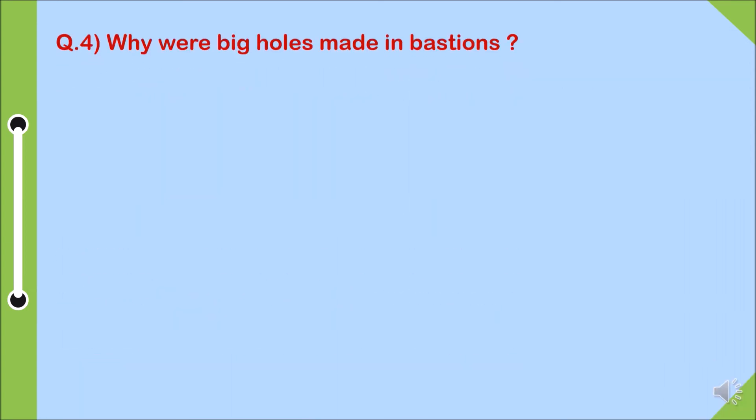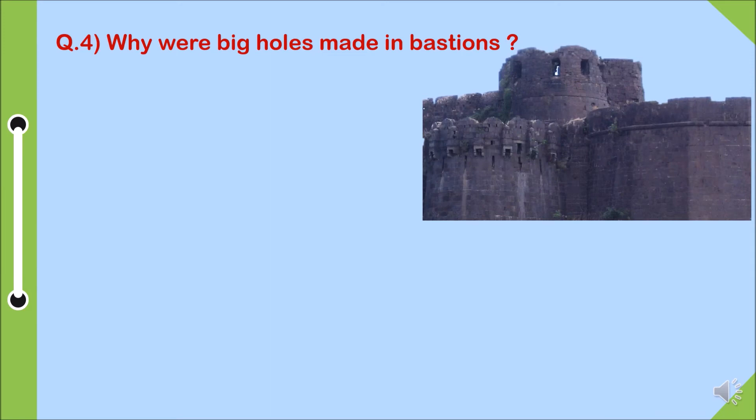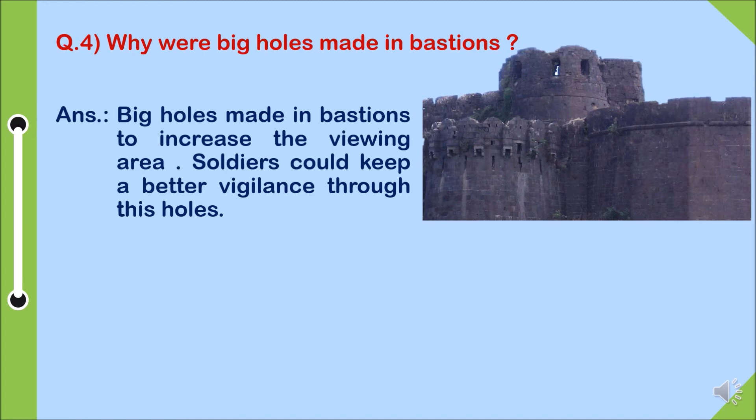Why were big holes made in bastions? Answer: big holes were made in bastions to increase the viewing area. Soldiers could keep a better vigilance through these holes.